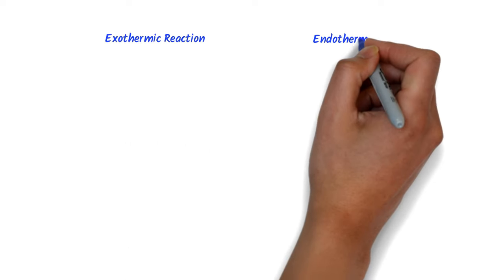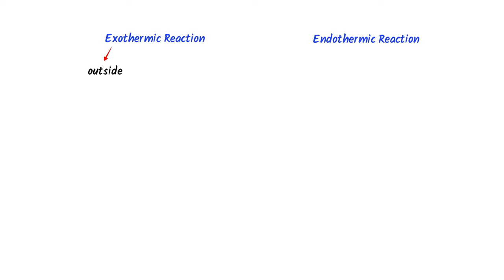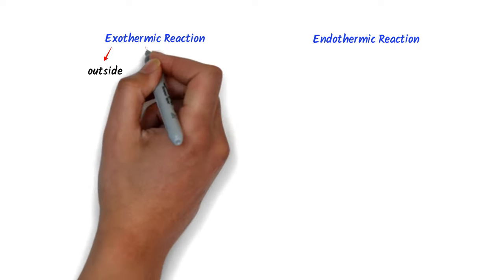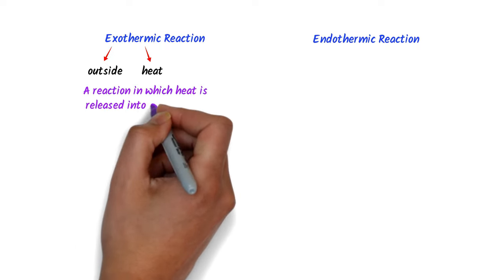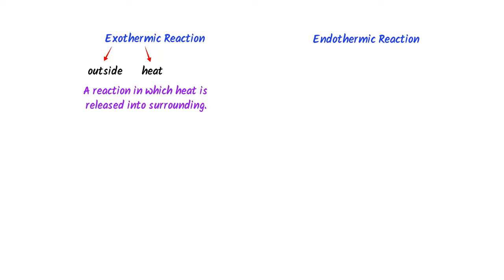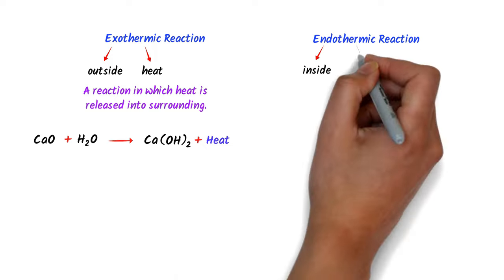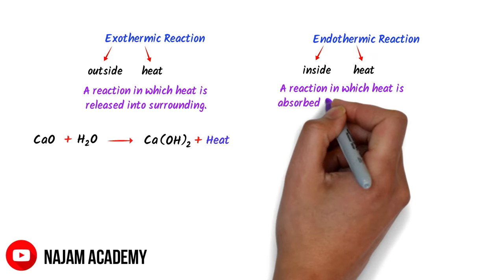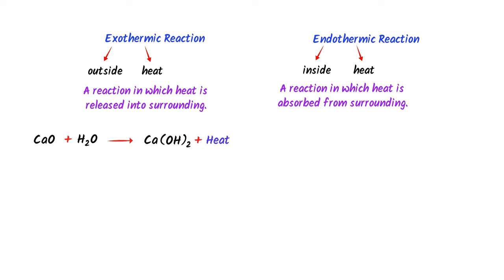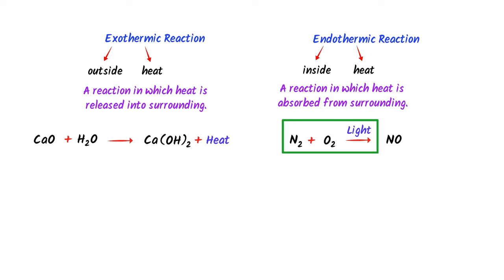Let me teach you a bonus concept — exothermic and endothermic reactions. 'Exo' means outside (exit) and 'thermic' means heat, so a reaction in which heat is released to the surroundings is called an exothermic reaction. For example, calcium oxide plus water react to form calcium hydroxide plus heat. 'Endo' means inside, so a reaction in which heat is absorbed from the surroundings is called an endothermic reaction. For example, nitrogen gas plus oxygen gas react in the presence of light to form nitric oxide — they absorb heat from sunlight.